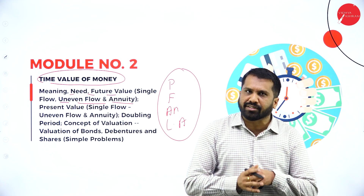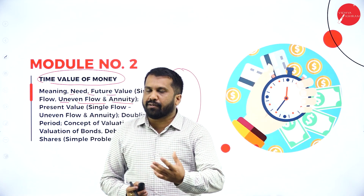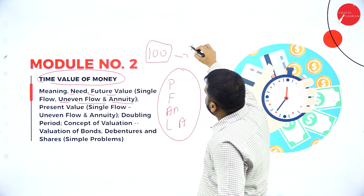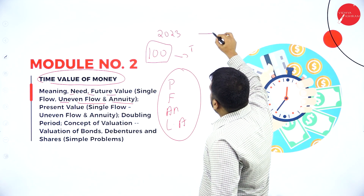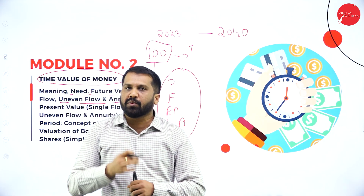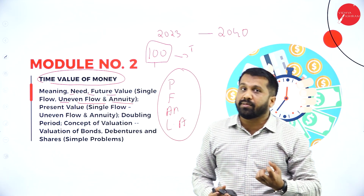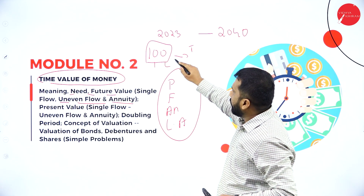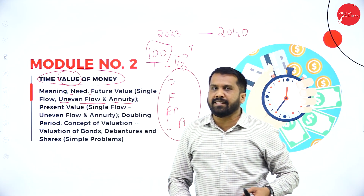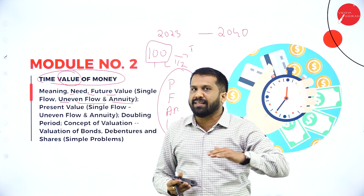The time value of money means understanding how money's value changes over time. For example, today's 100 rupees is worth 100 rupees today — in 2023, 100 rupees gets you one liter of fuel. But in 2040, 100 rupees may only get you half a liter or even less. So as time passes, the value of money changes — sometimes more, sometimes less.